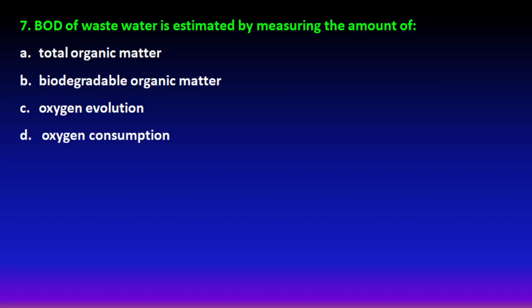Next question: biochemical oxygen demand (BOD) of wastewater is estimated by measuring what? We cannot estimate it from total organic matter, nor from biodegradable matter alone, nor from evolved oxygen. BOD is estimated from the consumption of oxygen. So option D is the right answer for question number 7.